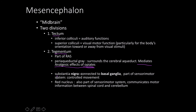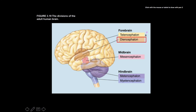The tegmentum also contains the substantia nigra and the red nucleus. The substantia nigra is connected to the basal ganglia and is important in Parkinson's disease — it's part of the sensory-motor system and plays a role in controlling movement. The red nucleus also communicates motor information between the spinal cord and the cerebellum.